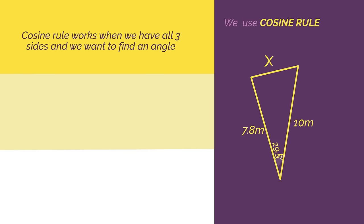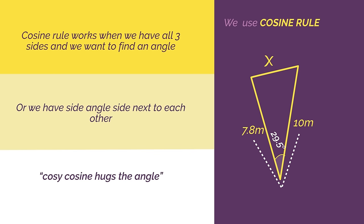The cosine rule works when we either have all three sides and we want an angle, or we have side, angle, side next to each other. Think of it as cosy-cosine hugs the angle. Side, angle, side.